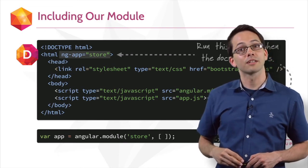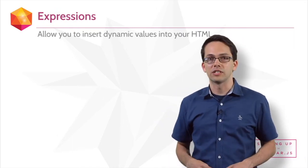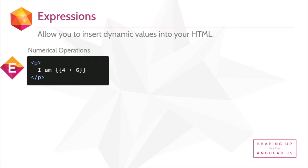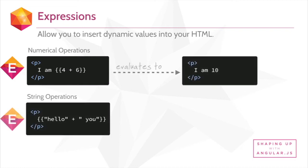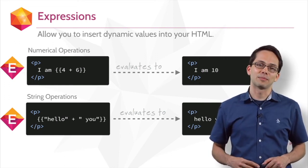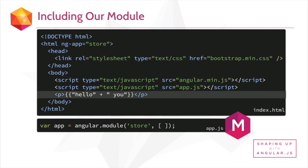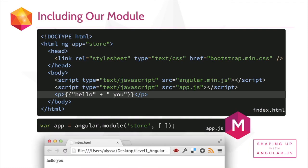This means we can start writing expressions. Expressions are how we insert dynamic values into our HTML. Here are some basic ones using numerical operations. So if we say I am 4 plus 6, that's going to render out on the page as I am 10. We could also do string operations, saying 'hello' plus 'you', and that's going to evaluate to 'hello you'. We'll be using lots of expressions inside of our Angular application, but for more examples, check out this URL. If I move 'hello you' into our Angular application and load it up locally in my browser, I'm going to get 'hello you', just as you might expect.